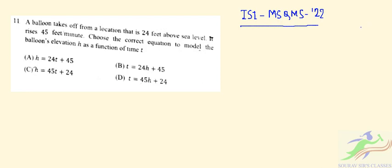Question number 11 is saying that a balloon takes off from a location that is 24 feet above sea level and it rises 45 feet per minute. We have to choose the correct equation to model the balloon elevation h as a function of time t.